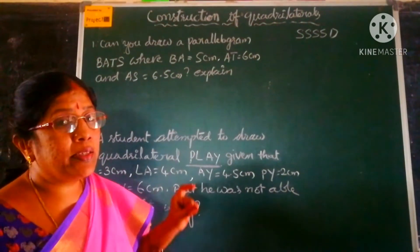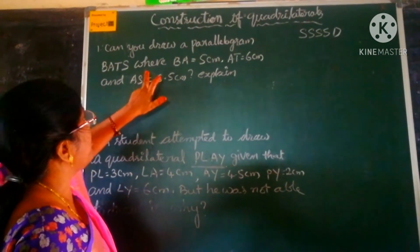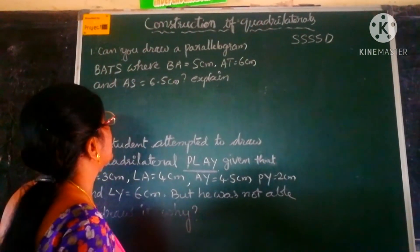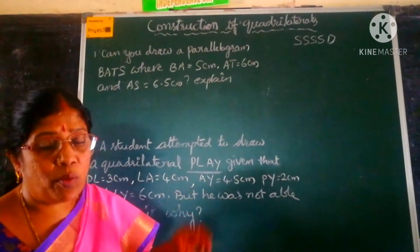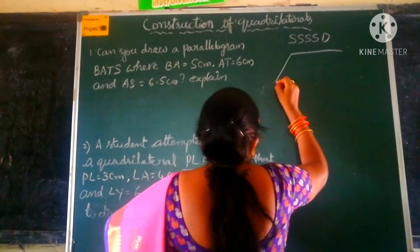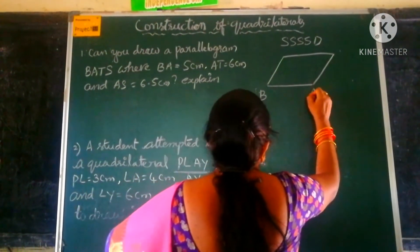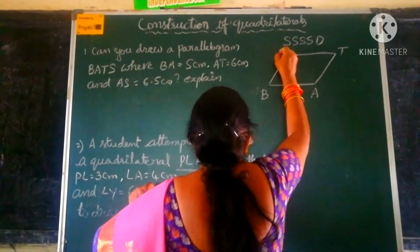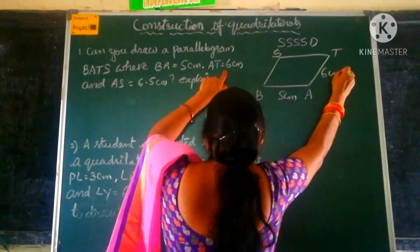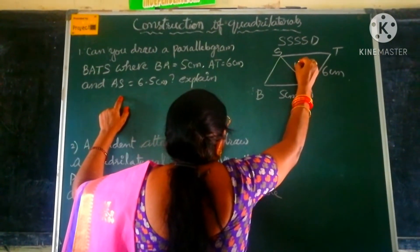Okay children? Now, let us see this problem. It is asking us: can you draw a quadrilateral where V is equal to 5 centimetres, 80 is equal to 6 centimetres, and H is equal to 6.5 centimetres? As it is a quadrilateral, we need only 3 measurements. We have been given 3 measurements. Let us write these for this rough sketch. This is a quadrilateral named BAPS. The measurements given are: BA is 5 centimetres, BP is 6 centimetres, and the diagonal AS is equal to 6.5 centimetres.